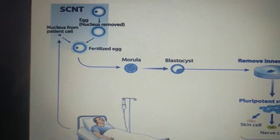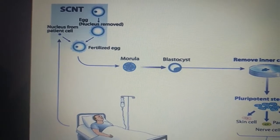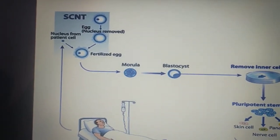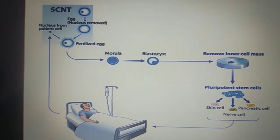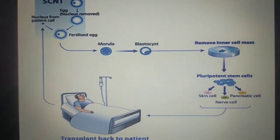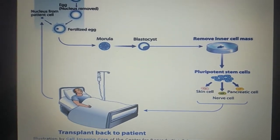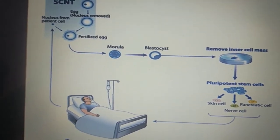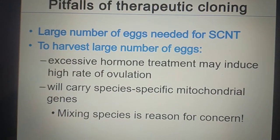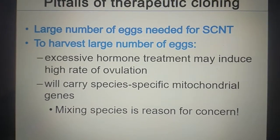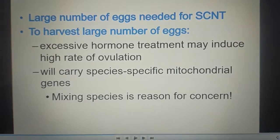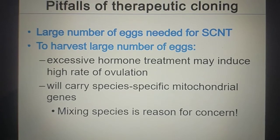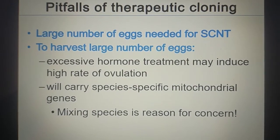This illustrates the complete technique of stem cell nuclear transfer — how pluripotent stem cells can be created through therapeutic cloning. One drawback is that a large number of eggs are needed for stem cell nuclear transfer.